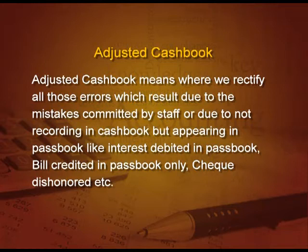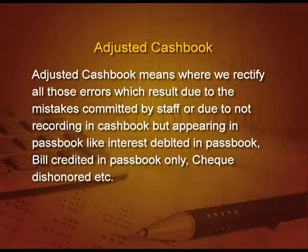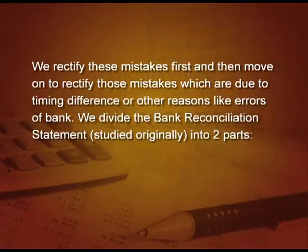We now move on to our last topic in this chapter, that is the adjusted cash book. Adjusted cash book means we rectify all those errors which result due to mistakes committed by the staff or due to not recording in the cash book but appearing in the pass book — like interest debited in pass book, bill credited in pass book only, check dishonored, et cetera. These are mistakes of the accountant. When you have seen it in the pass book and you are not writing it in the cash book, it will be taken as a mistake of the accountant. So first we rectify these things, then move on to rectify mistakes due to timing differences or other reasons like errors of the bank.